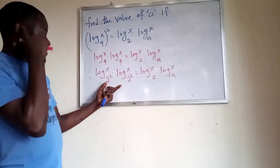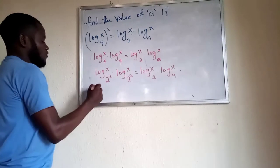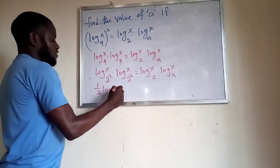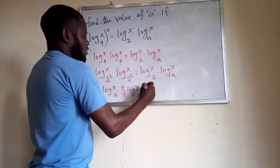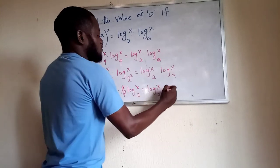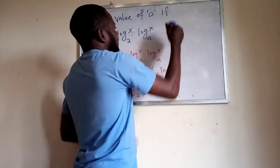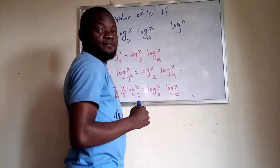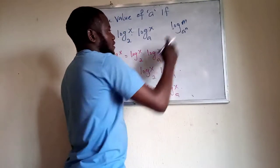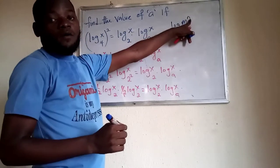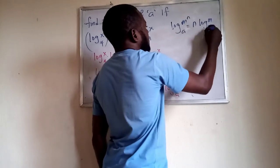The main purpose of doing this is to make log x in base 2 common to both sides. So this will become 1 over 2 times log x in base 2, and on the other side, 1 over 2 log x in base 2 equals log x in base 2 times log x in base a. Let me clarify: if you have log of m to the power of n in base a, this is the same as n log m in base a.